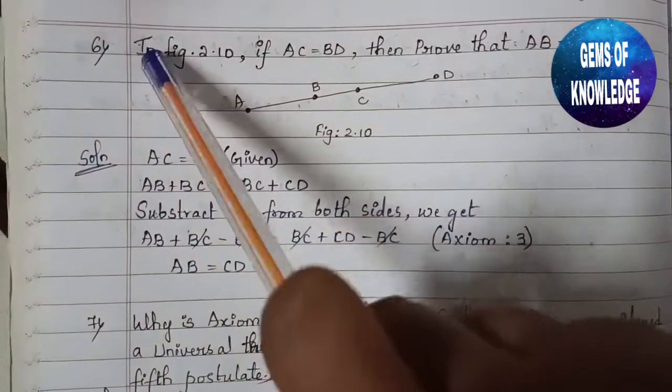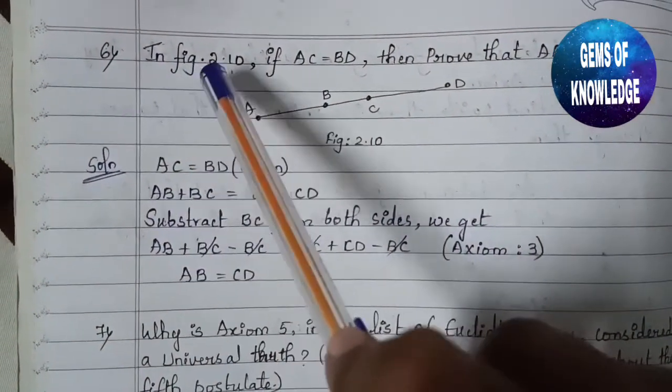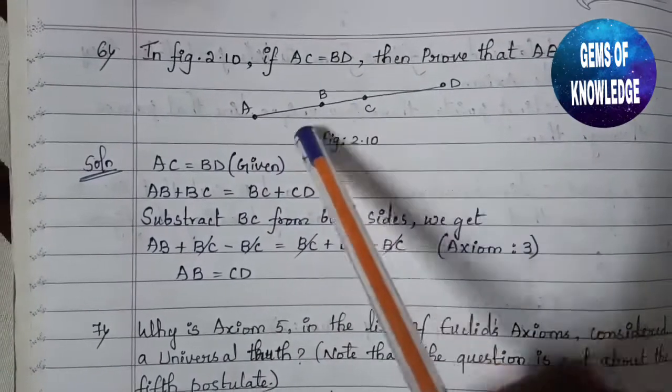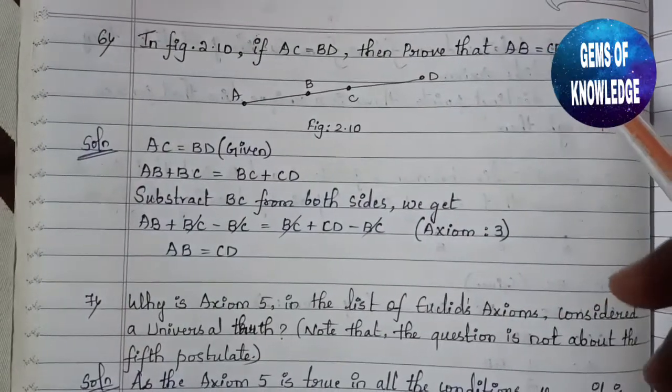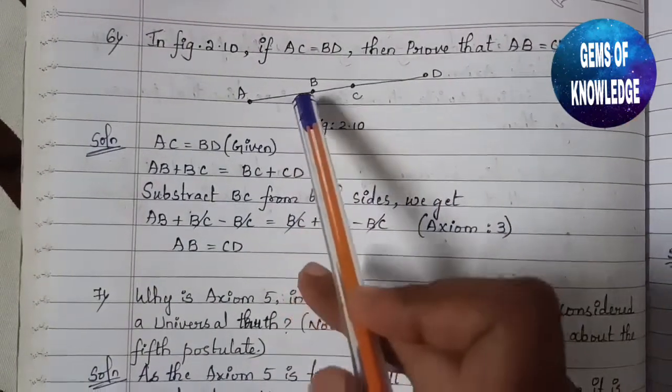Here is the sixth question. In Figure 2.10, if AC equals BD, then prove that AB equals CD.